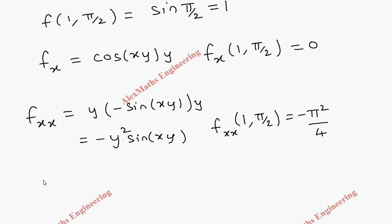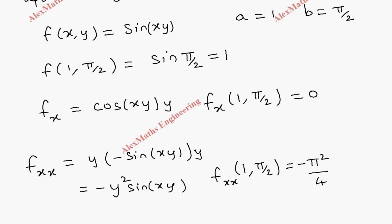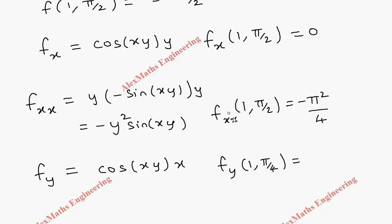Now let's find fy. We differentiate sin(xy) with respect to y: fy = cos(xy) · x, since x is constant. So fy(1, π/2): substituting gives cos(π/2) · 1 = 0.